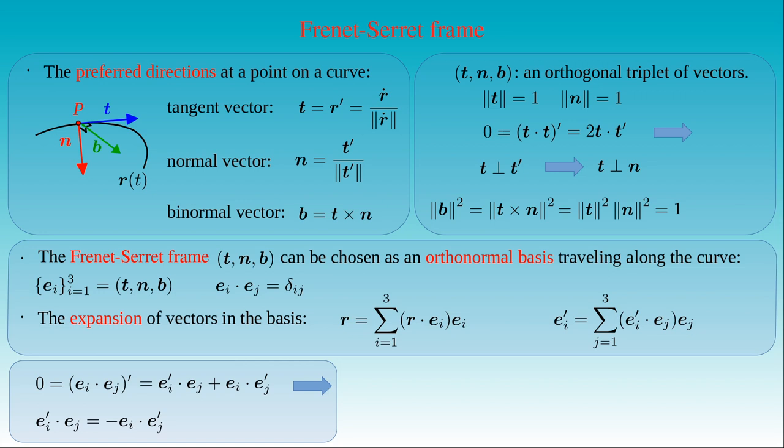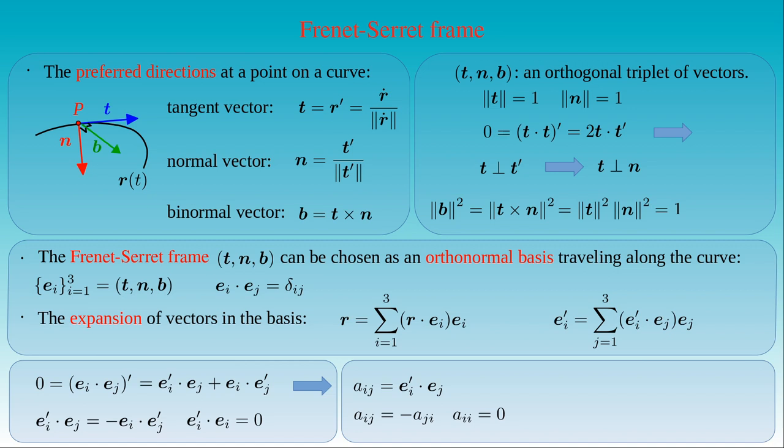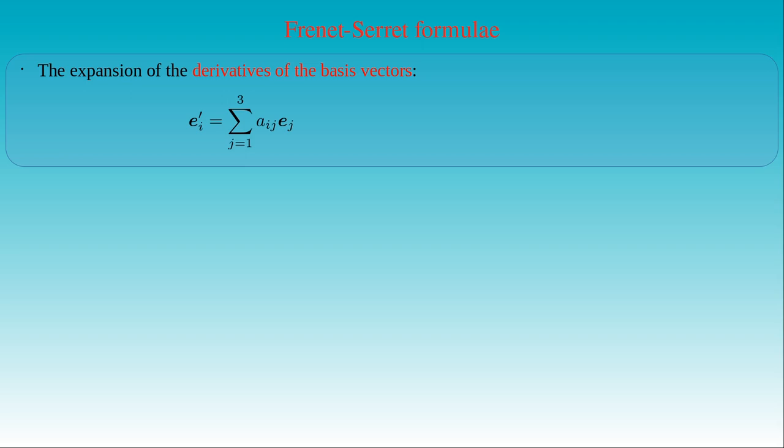If the index i equals the index j, both sides of this equation must vanish, giving a vanishing dot product of e_i-prime and e_i — that is, any basis vector is perpendicular to its derivative, as expected for unit vectors. If we define the matrix a_ij with entries e_i'·e_j, we see that this matrix is antisymmetric and trace-free, which follows from its antisymmetry. Let us denote the non-vanishing off-diagonal elements of this matrix with alpha, kappa, and tau. We can then write the basis expansion of the derivatives of the basis vectors as a matrix-vector multiplication, where the matrix a_ij is multiplied by a vector with the basis vectors as elements.